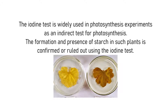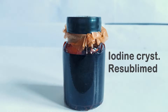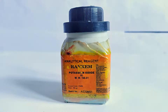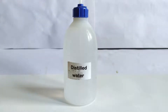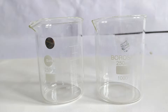To prepare 100 ml each of these two types of iodine solutions, we will need the following: elemental iodine resublimed crystals, potassium iodide crystals, distilled water, and two beakers of 100 or 250 ml capacities each.